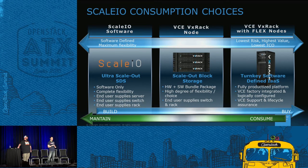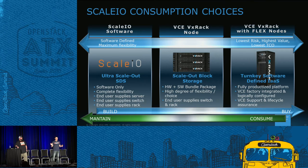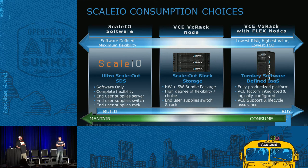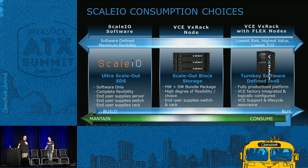From a consumption choices perspective, ScaleIO gives customers options. Are you a DIY customer with a relationship with Supermicro, Quanta, or Dell? We can sell you just the software. On the other end of the spectrum, the VCE VxRack System 1000 Flex gives you a turnkey solution — software, hardware, switches, rack, and management software, a true hyperconverged rack-scale architecture. In the middle, we have customers who want hardware and software together but will handle the OS, hypervisor, and networking themselves.